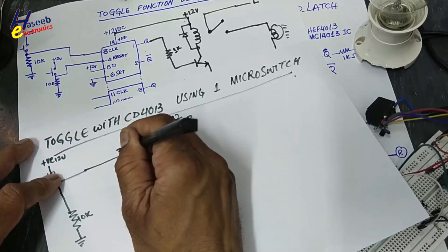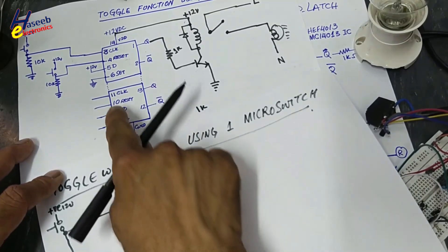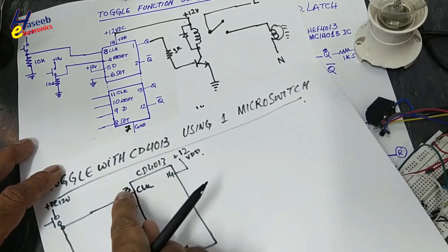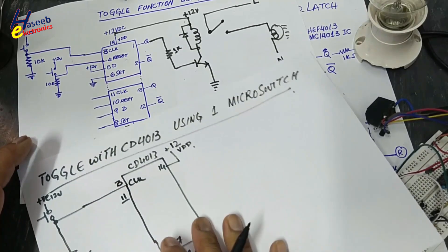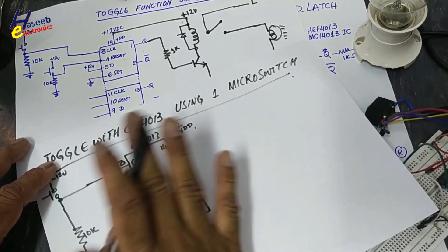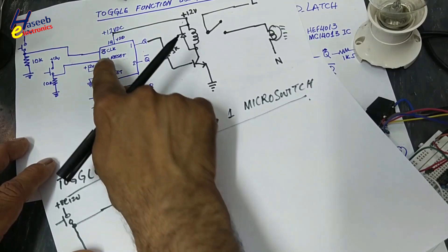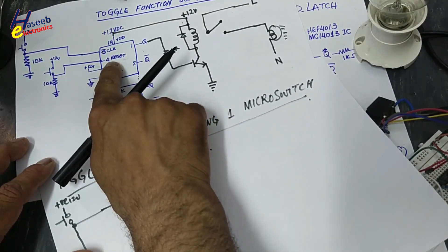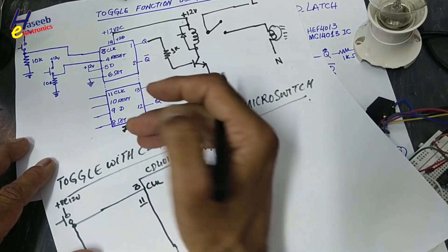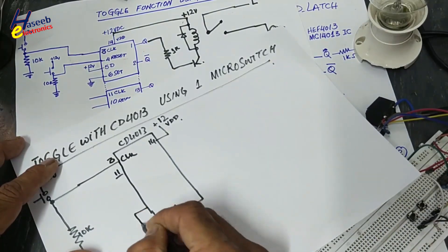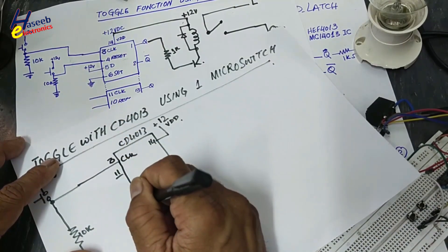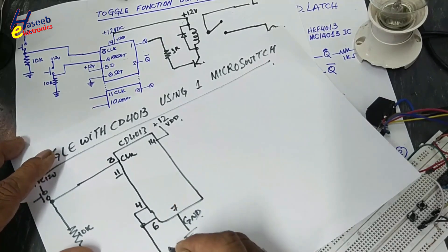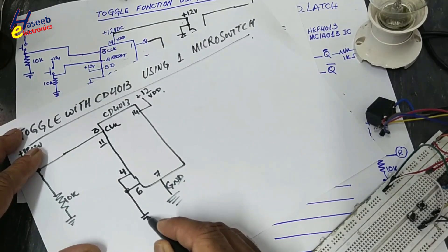Pin number 3 clock. If you are using second section, then pin 11 will clock. But this time we are using pin number 3. Pin 4 reset. Now we are not using reset. We will connect reset and set pin to ground. In our case, pin 4 reset, pin 6 set. We will connect to ground.